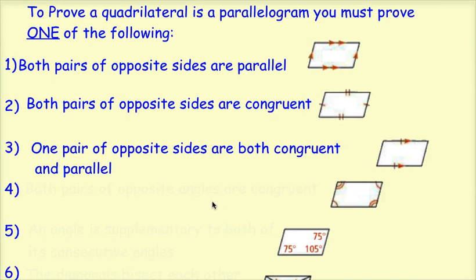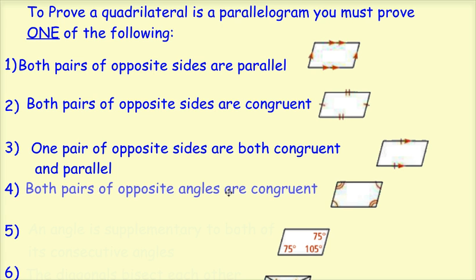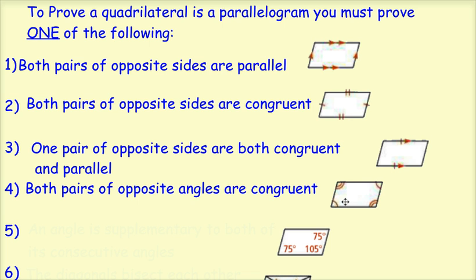The fourth way has to do with angles. These opposite angles are congruent, and those opposite angles are congruent. So if you have both pairs of opposite angles congruent, then it's a parallelogram. These are similar to the properties we learned yesterday, so it's not brand new information. If both pairs of opposite angles are congruent, then it's a parallelogram.